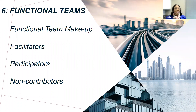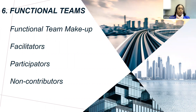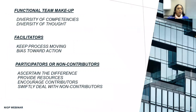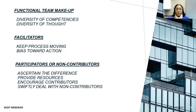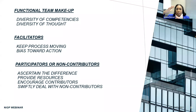Functional teams — this is the fun part. The functional team makeup. We're going to talk about the facilitators, the participators, and the non-contributors. A functional team needs diversity of competencies and diversity of thought. Sometimes there are people we want to work with because they're easy to work with — that's fine. But we also need those that are difficult, because sometimes the people that are difficult have the right ideas or the right concepts. They challenge us. We have to be challenged if we're going to grow, if we're going to learn, if we're going to rise above and not be average.